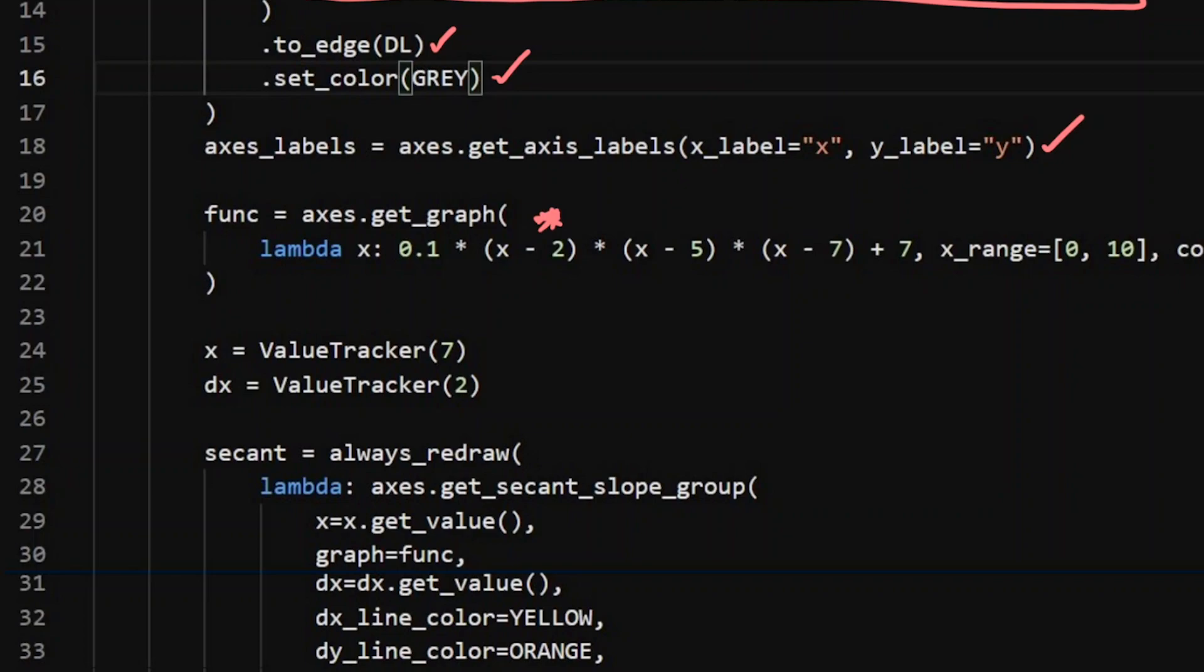Now comes the value trackers and the updater stuff. So this here, I've got two updaters. I've got an x value and I've got a dx value. If you can imagine, here's your graph.